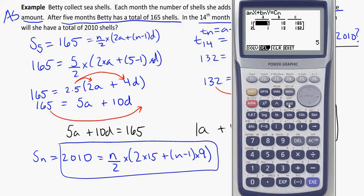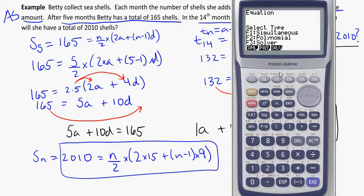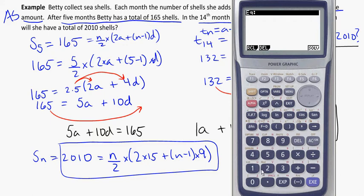So 2010 equal to something we don't know divided by 2, times bracket 2 times 15 plus bracket X minus 1 bracket times 9 bracket. And hit solve.